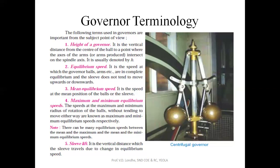Next is Sleeve Lift. The sleeve is the component attached to the spindle. When the balls move outward, the sleeve moves upward or downward depending on the ball movement. Sleeve lift is the vertical distance which the sleeve travels so as to change the equilibrium position or to control the supply of fuel towards the engine.